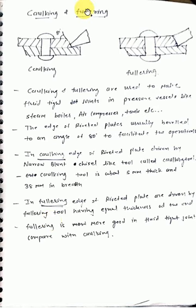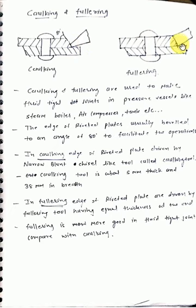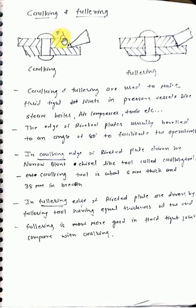Next is caulking and fullering — these processes are used to make a fluid-tight joint. For example, in a boiler or air compressor, you need a fluid-tight joint to prevent leakage. The tool used to differentiate the processes are the caulking tool and the fullering tool. The edge of the riveted plate is usually beveled to an angle of 80 degrees.